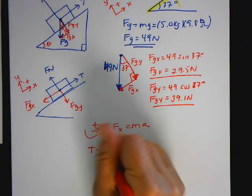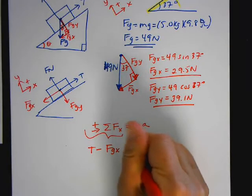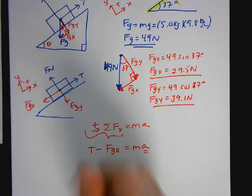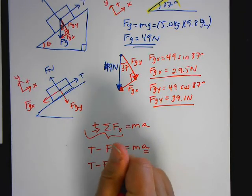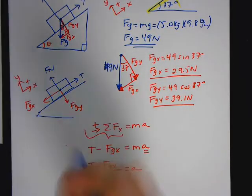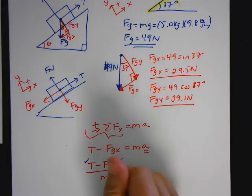What forces do I have going in the X direction? So I have T minus FGX is equal to MA. I want to solve for A. So I'm going to rearrange the equation to solve for the unknown in terms of the known. So T minus FGX over M is equal to A. I have T. I have FGX and I have M.